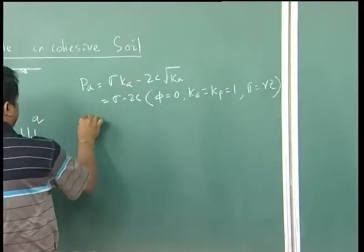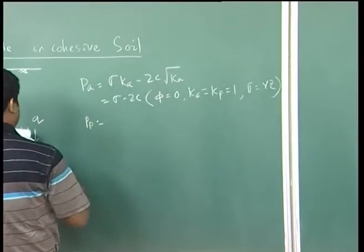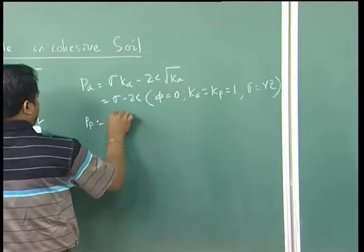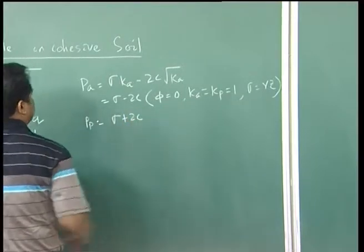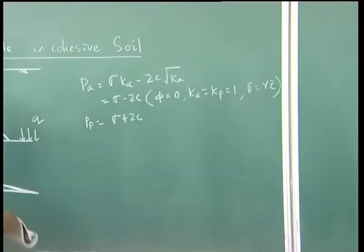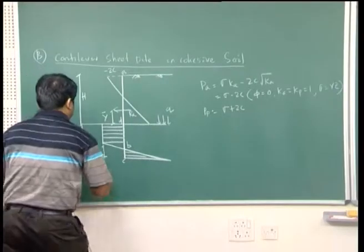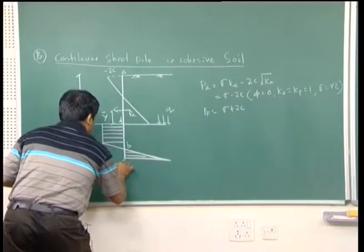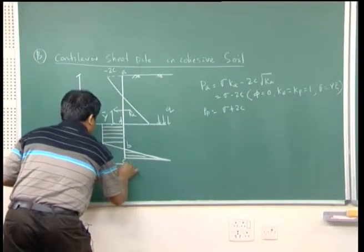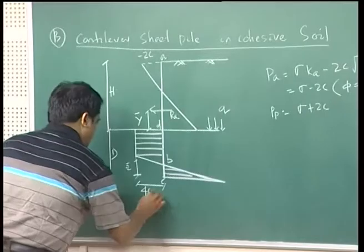Similarly, the passive earth pressure is PP = σ + 2C. If you look at the diagram, this part shows 4C − Q.